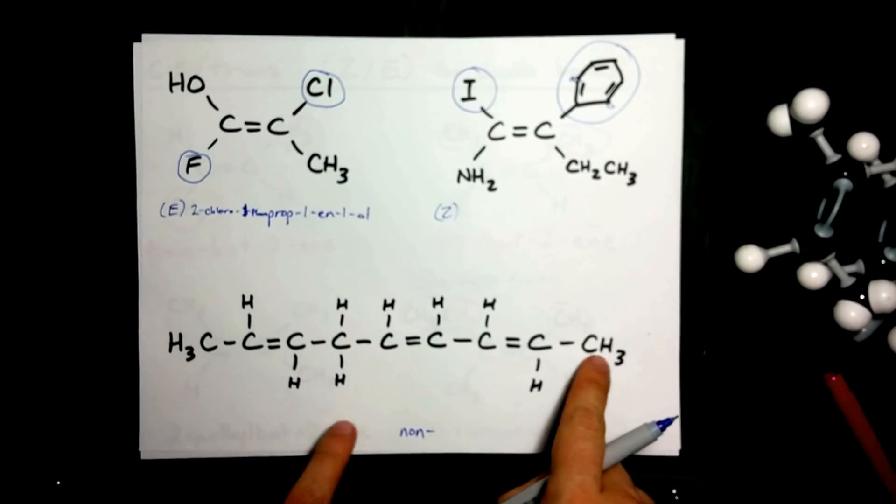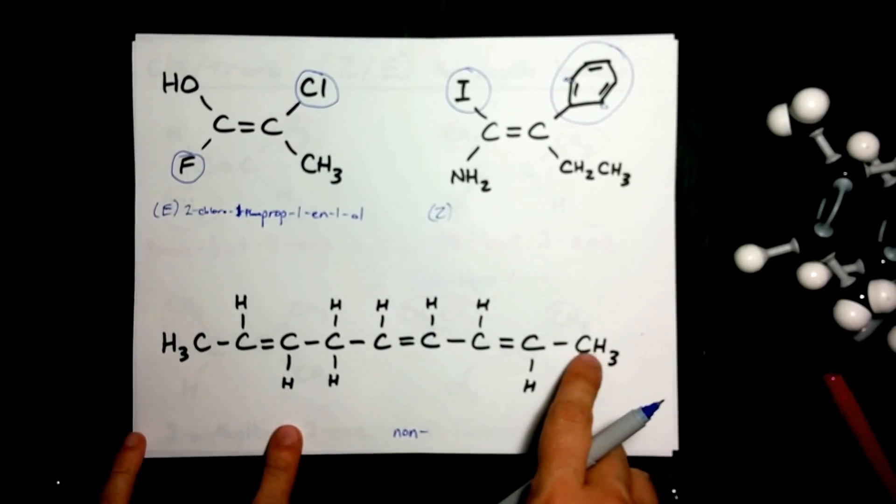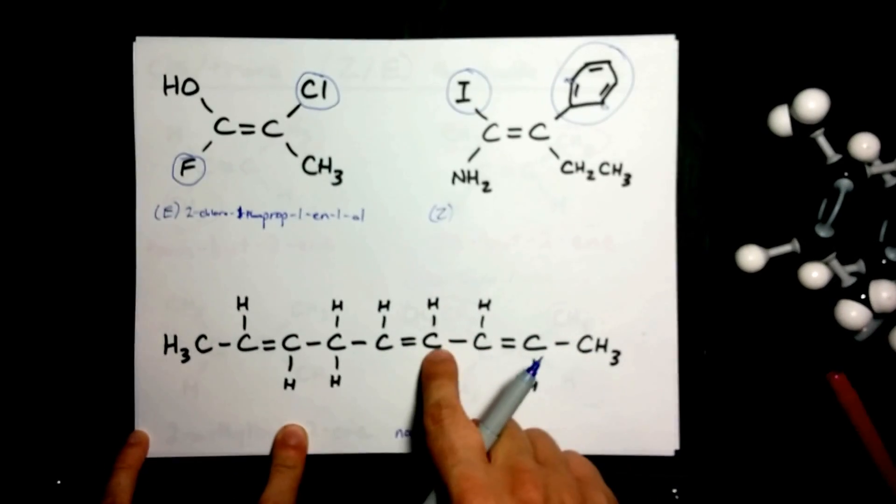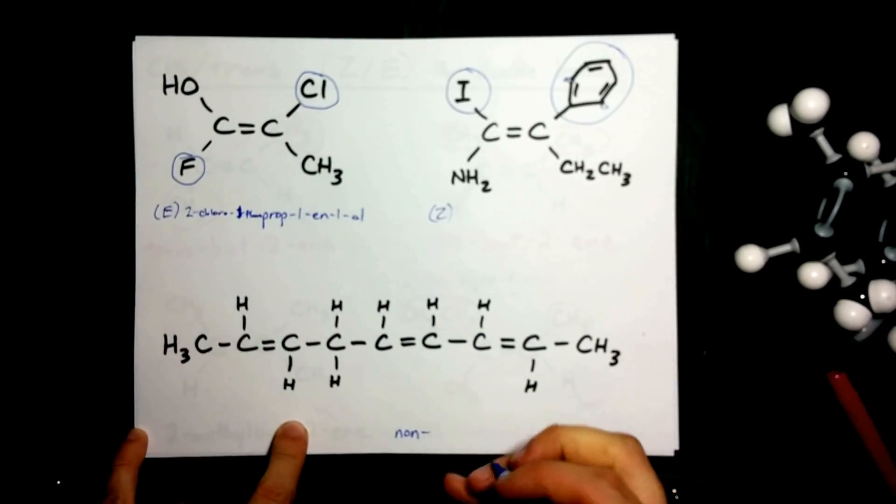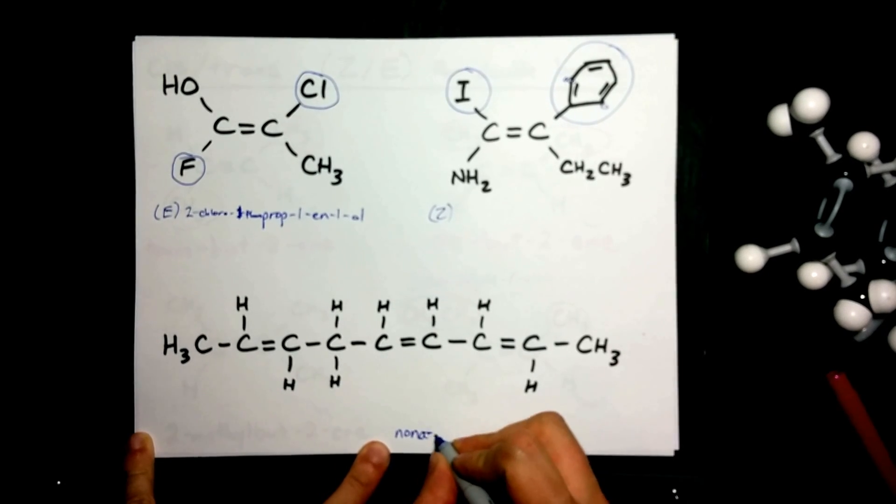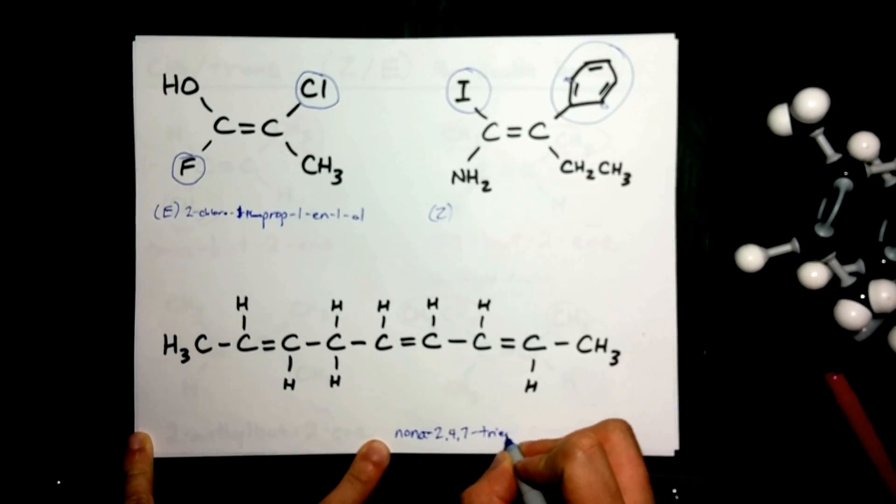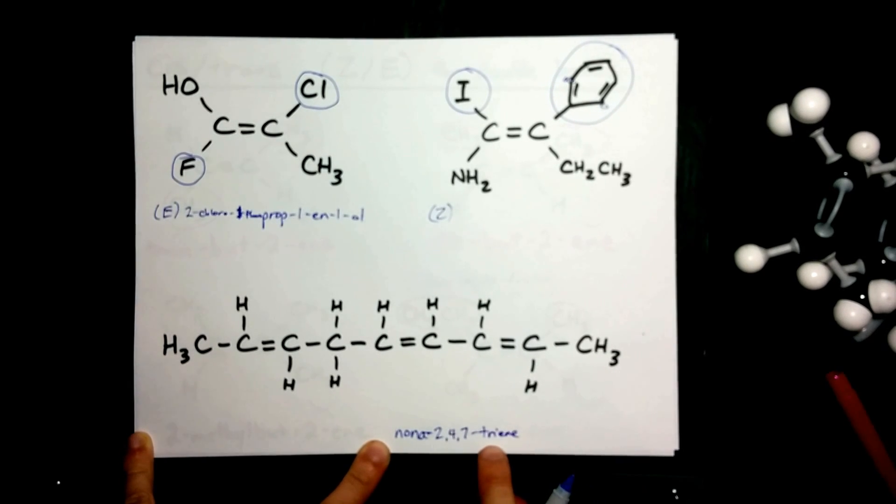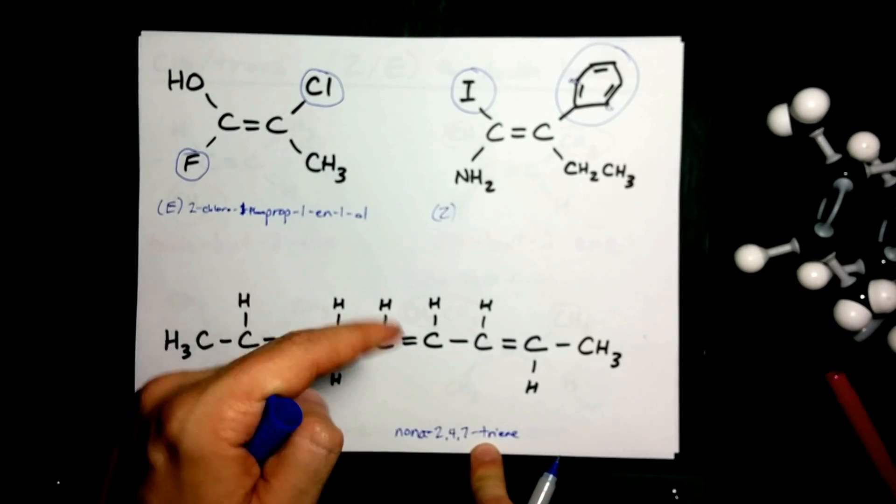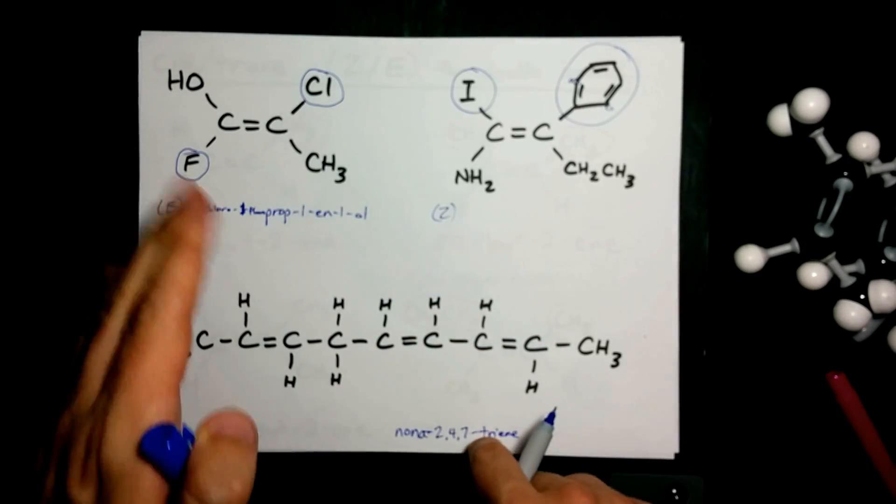And the double bonds, I think starting from this side gives us the lowest numbers. One, two, three, four, five, six, seven. Non, uh, 2, 4, 7 triene. Three double bonds starting at carbon two, four, and seven. And it's a nine carbon chain. I had to include this vowel because now the T is the next letter. It's a consonant. Okay.